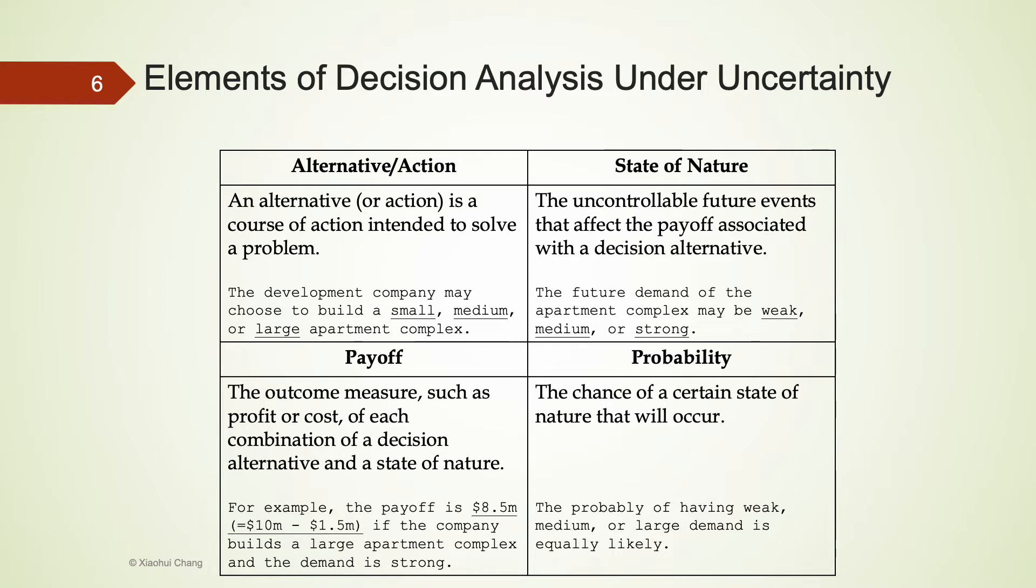The last element, the probability, is the chance of a state of nature will occur. In our example, all three states have an equal chance to occur. That's one-third for each state.